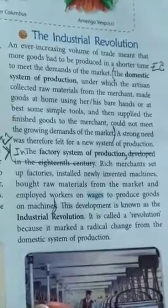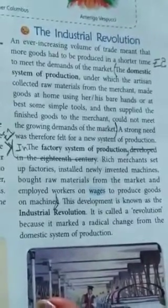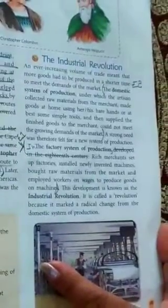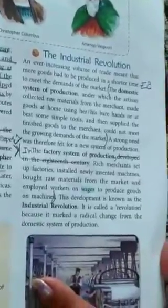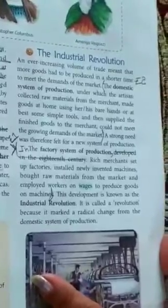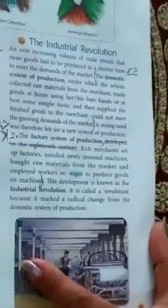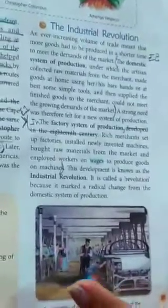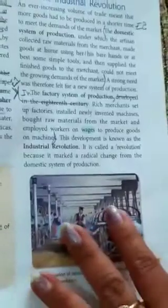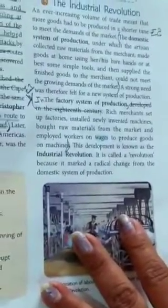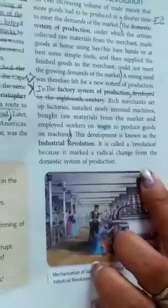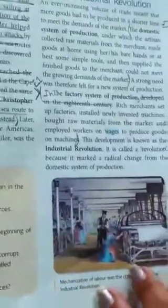The factory system of production developed in the 18th century. Rich merchants set up factories, installed newly invented machines, bought raw materials from the market, and employed workers on wages to produce goods on machines. This development is known as the Industrial Revolution. It is called a revolution because it marked a radical change from the domestic system of production.